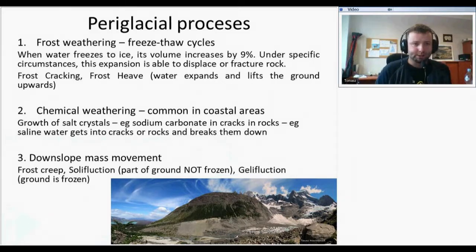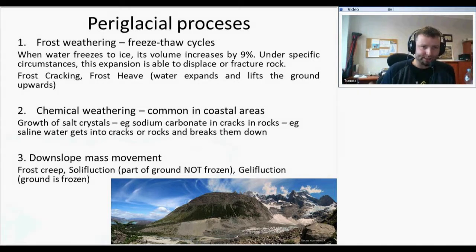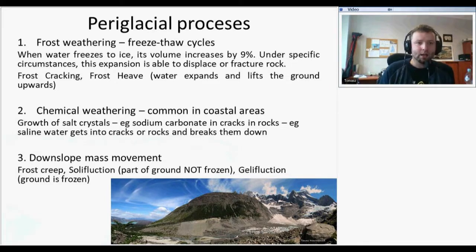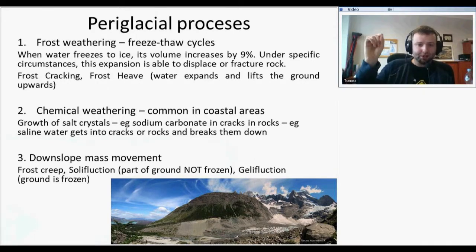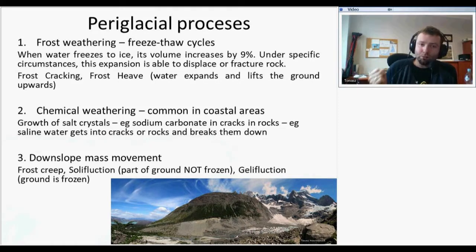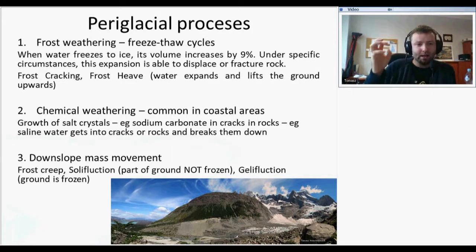Different processes are connected with periglacial zones. There is frost weathering — freeze-thaw cycles — where freezing water changes into ice and its volume increases by 9%, and in specific circumstances this expansion is able to displace or fracture rocks, even huge ones. There is also chemical weathering through the growth of salt crystals: water containing different salts can get into cracks and break them down, with different salt crystals growing or melting and going down with water before freezing again.